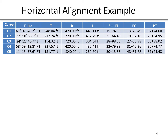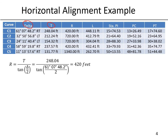Here is a bit more information showing the full solution to the problem. I'll work through one as an example. We have our delta, we were given our T, and we'll calculate the remaining components. Starting with the radius, we calculate it based on the T distance given and the delta — those are the two values we need. The formula is tangent length divided by the tangent of delta divided by 2. For the first curve, we calculate a radius of 420 feet.